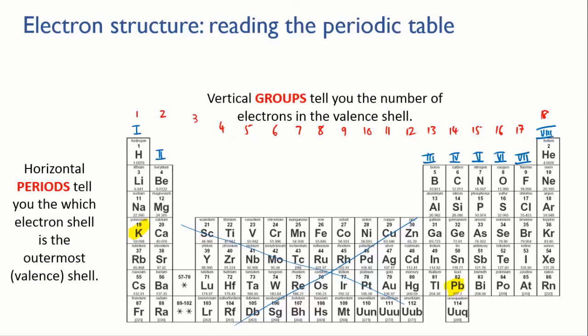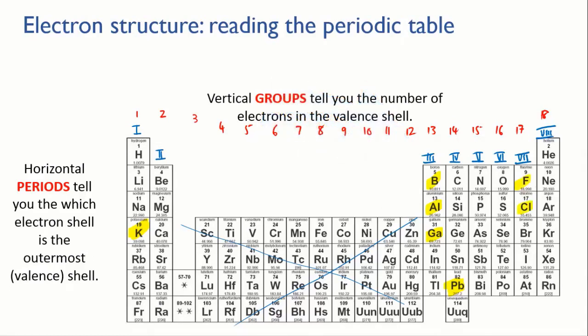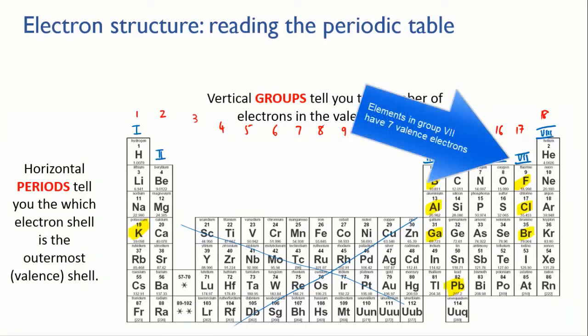So for instance, boron, aluminum, and gallium are all in group 3. They each have three electrons in their outermost shell. While, for instance, fluorine, chlorine, and bromine, they're in group 7, they all have 7 valence electrons.